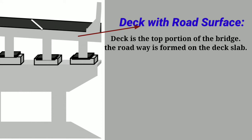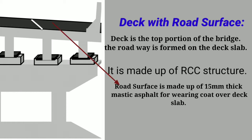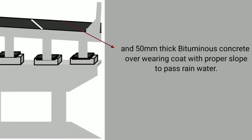Now, deck with road surface. The deck is the top portion of the bridge. The roadway is formed on the deck slab, and it is made up of RCC structure. The road surface is made up of 15 mm thick mastic asphalt as a bearing coat over the deck slab, and 50 mm thick bituminous concrete over the bearing coat with a proper slope to drain rain water.